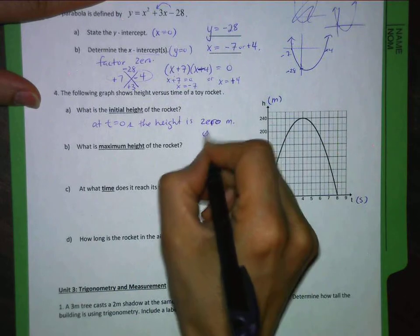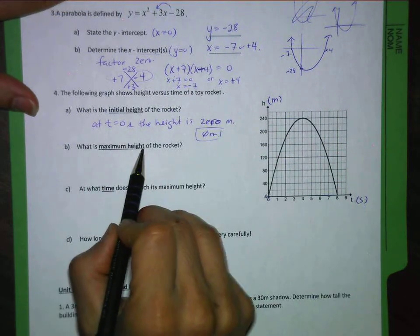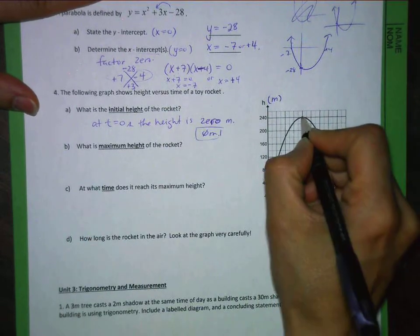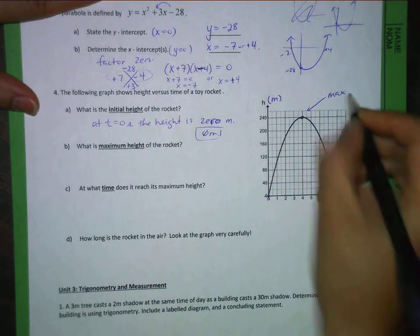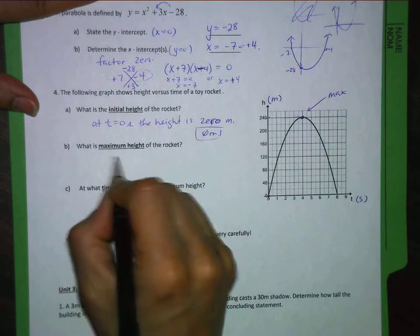What's the maximum height? Well, the maximum means the highest. So I'm going to look at here. This is the motion. So here, this is the maximum. So I need to read that off. That was at 240 meters. The maximum height was 240 meters.